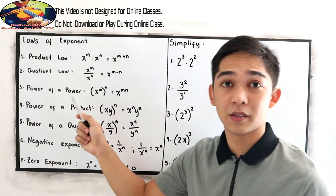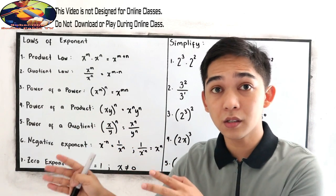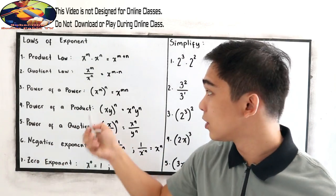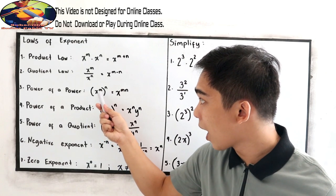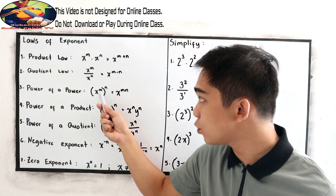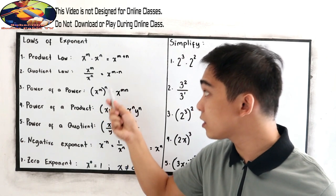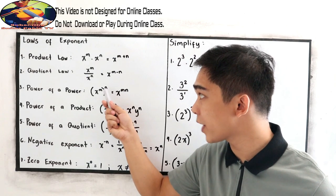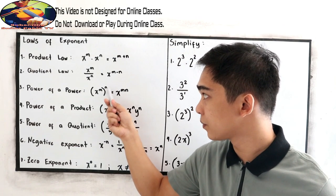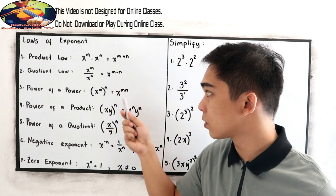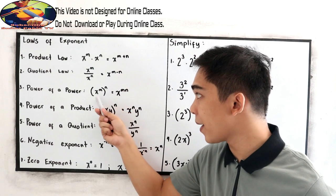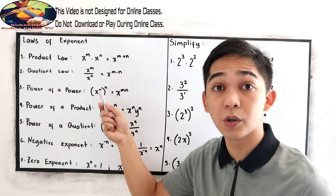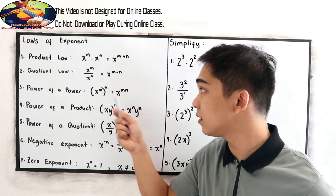Power of a power — power is another term for exponent. So x raised to m, raised to n: we have two exponents. The base is x, and we're just going to multiply m times n, giving x raised to mn.